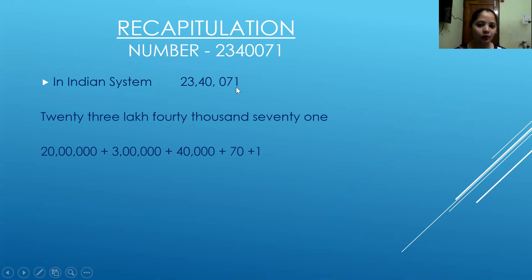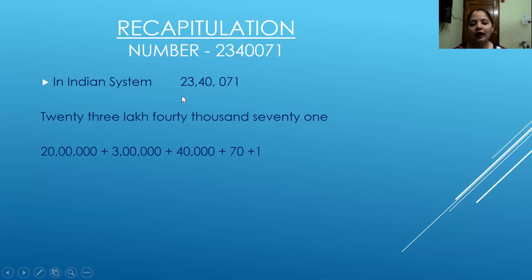If you remember: ones, tens, hundreds — comma — thousands, ten thousands — comma — lakhs, ten lakhs. So I will read and write the number as 23,40,071.